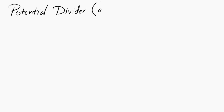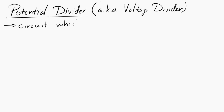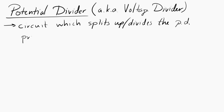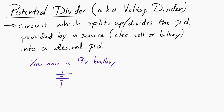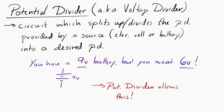Let's look at the potential divider, also known as a voltage divider. This is a circuit which is designed to split up or divide the potential difference provided by a source — an electrical cell or a battery — into a desired potential difference. For example, let's say you had a 9 volt battery but you want 6 volts across your resistor. The potential divider divides up that 9 volts from your source into 6 volts.